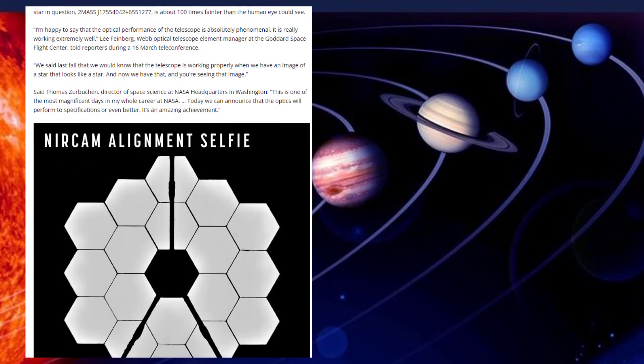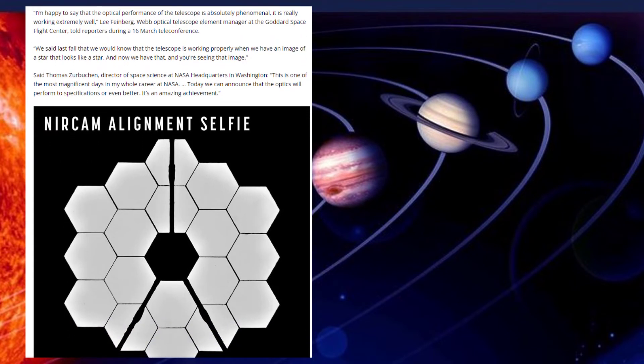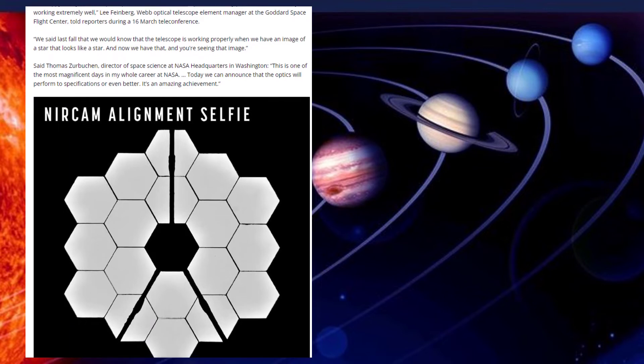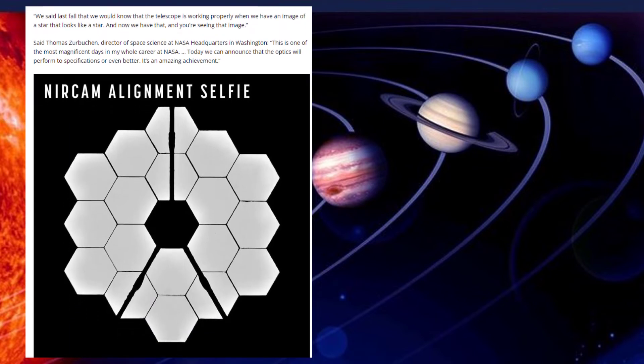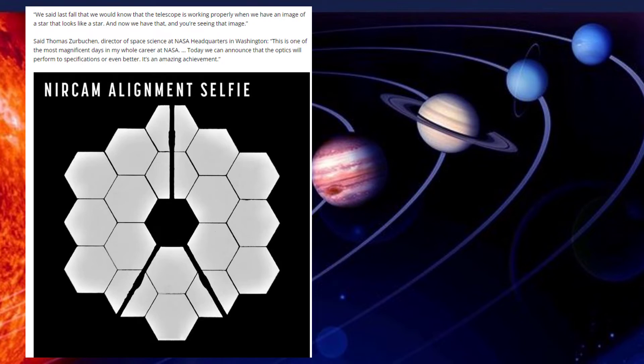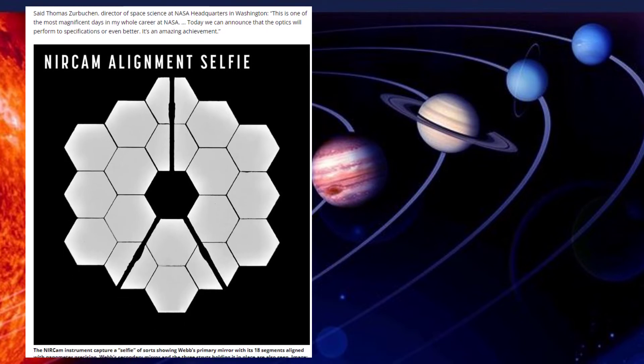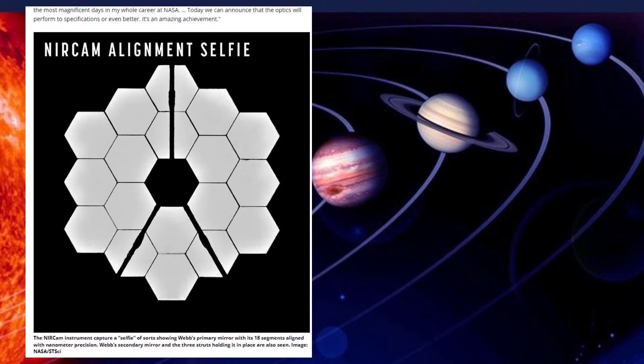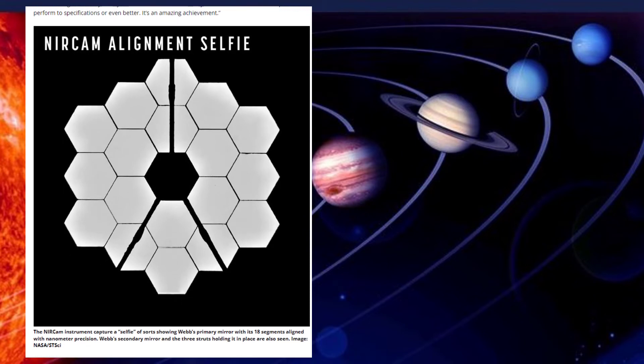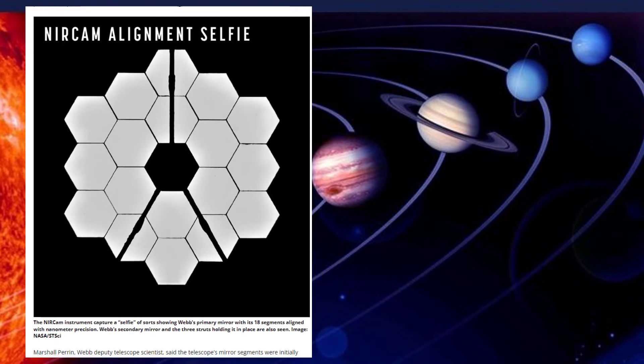Marshall Perrin, Webb Deputy Telescope Scientist, said the telescope's mirror segments were initially aligned to within about a millimeter of each other. To adjust them so all 18 act together as if part of a single mirror, they need to be lined up to within a few nanometers, billionths of a meter, of one another. It's a few hundred atomic diameters.